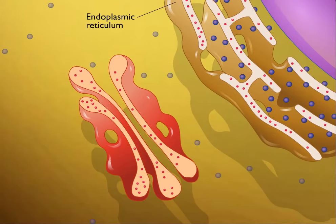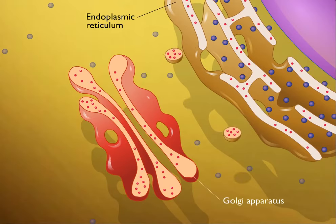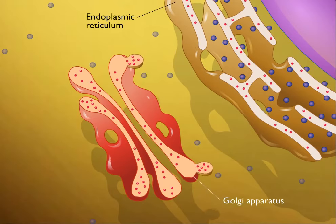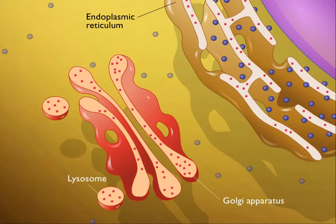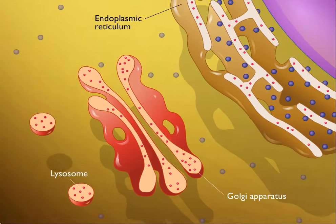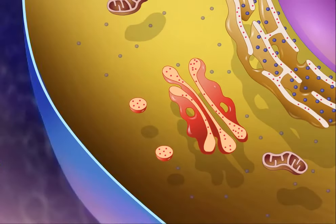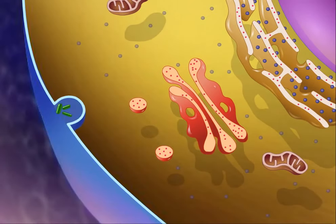These enzymes are then transported to the Golgi apparatus by transport vesicles. The lysosomes arise from the Golgi apparatus. When particles such as viruses or bacteria are ingested by phagocytosis,